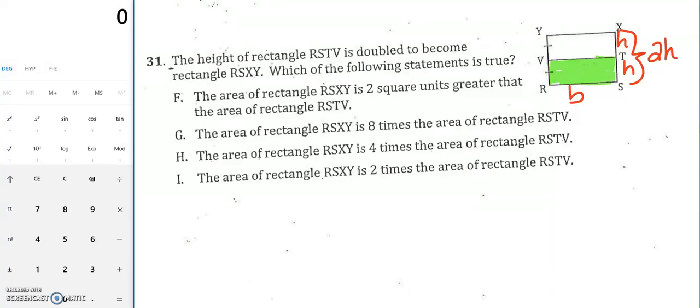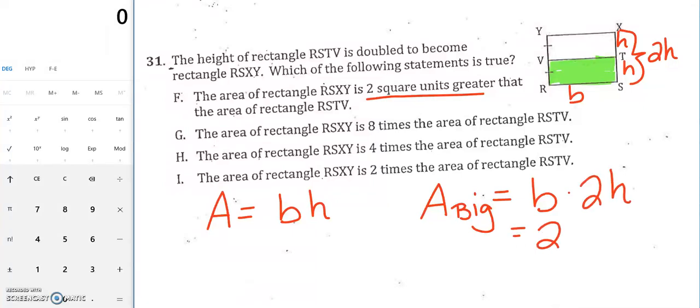So the first one says that the area of the new rectangle, the big one, RSXY, is 2 square units greater than the area of the smaller one. So just 2 units larger, not 2 times, not 2 less, but 2 units more. So let's think about what the area would be for the little green triangle. The area of the green one would just be base times height. Now the big one, the area of the big rectangle, is going to be base times your height of 2H. In other words, it's going to be 2 times base times height. So if I'm comparing the two, I have just a regular base times height, and then I have 2 times base times height. So that means that the area of the big rectangle is going to be twice as large, 2 times as large, as a smaller green rectangle. So I'm going to go with choice I, that says it's 2 times the area of the smaller rectangle.